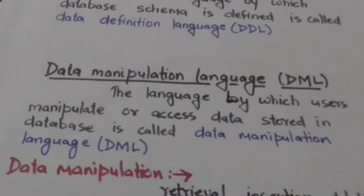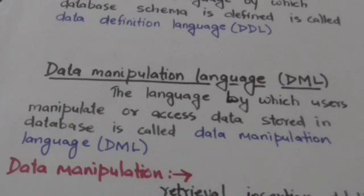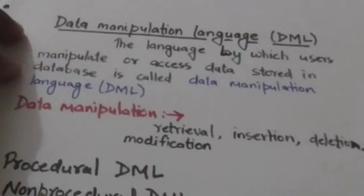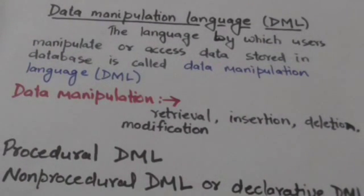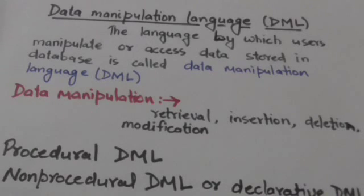The language by which users manipulate or access data stored in the database is called Data Manipulation Language, that is DML. Data manipulation includes retrieval of information stored in the database, insertion of new information into the database, deletion of information from the database, and modification of information stored in the database.